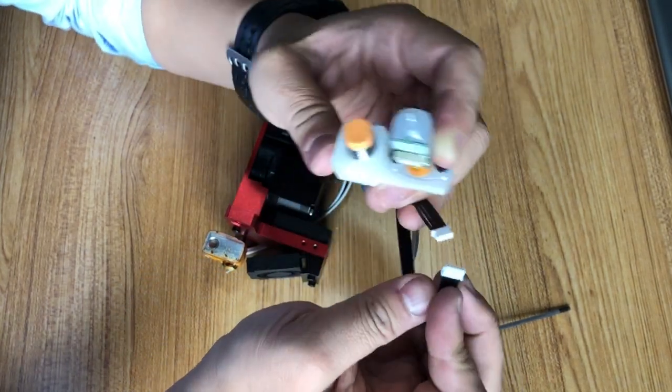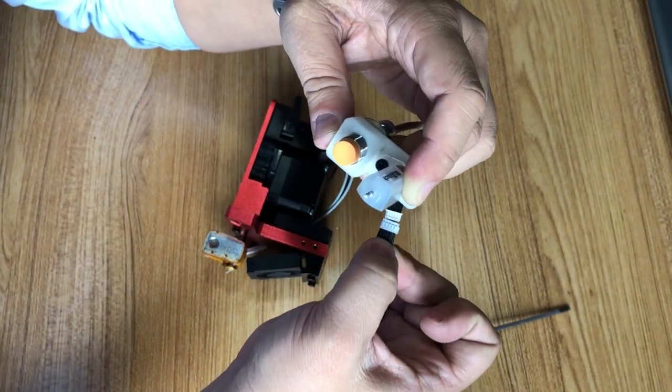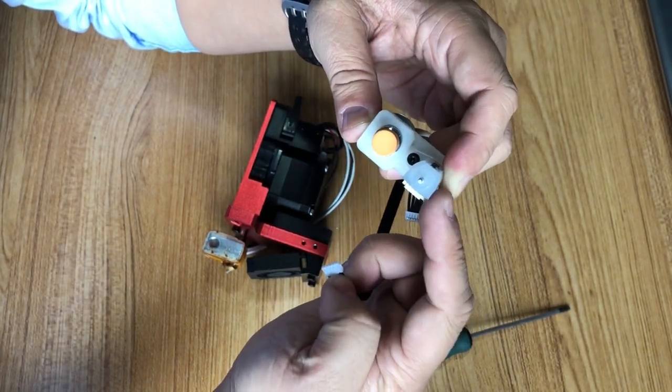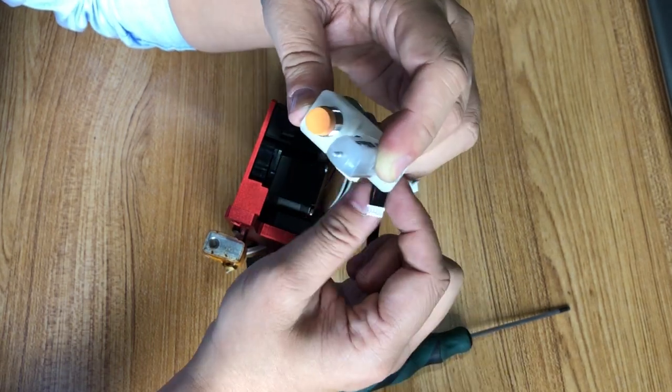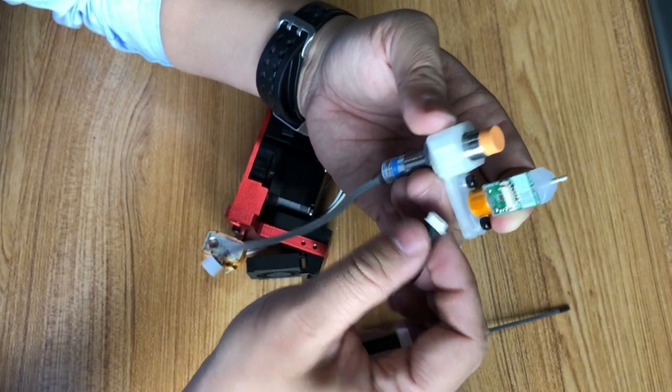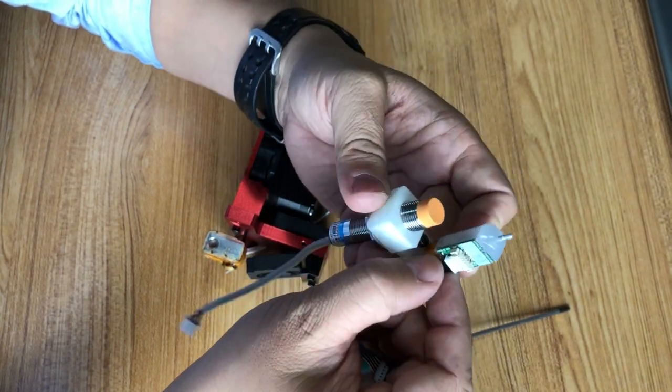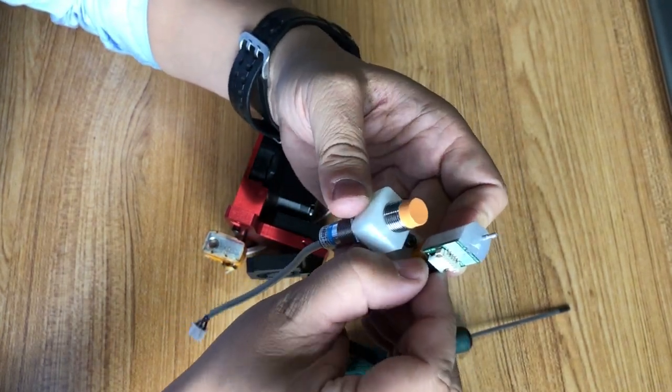There are two sides. One side is a little bit smaller, which goes to the BLTouch. One side is a little bit bigger, which goes to the five pin into the socket.